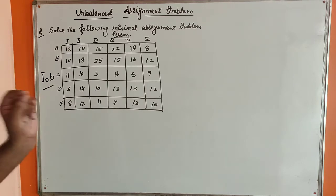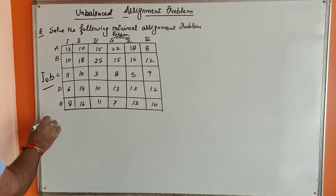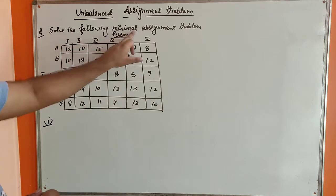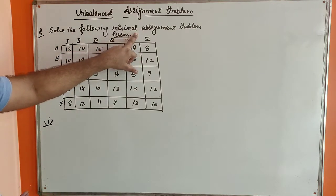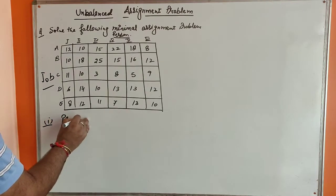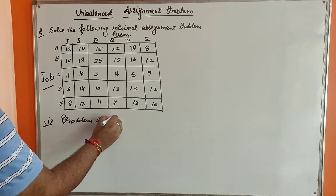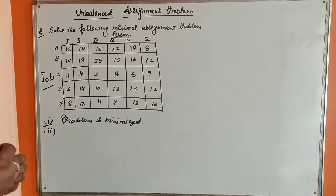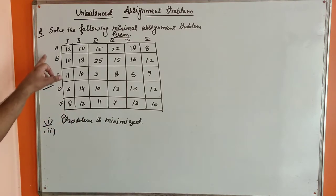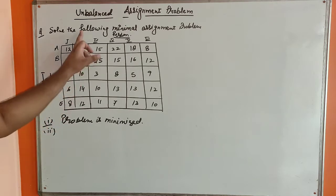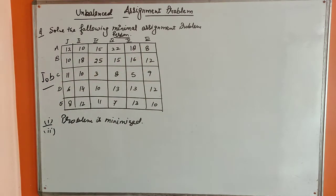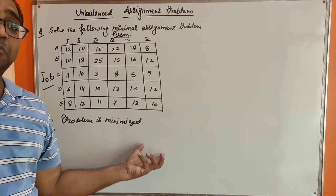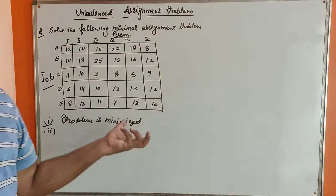The first condition is that the problem should be minimized. We check: solve the following minimal assignment problem — so the problem is minimized. The second step is the problem should be balanced. In this particular problem, there are five jobs and six persons, so this is an unbalanced problem.